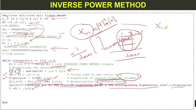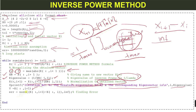To check the error in the solution, we compute x(i+1) minus the previous vector x(i), using the infinity norm. The error is set to norm(x(i+1) - x(i), inf), which gives the infinity norm of the difference.